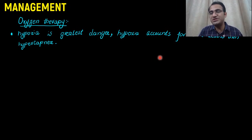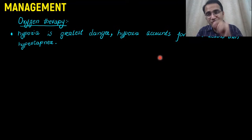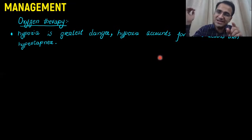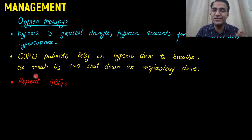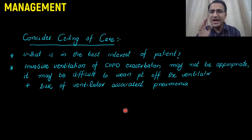COPD patients are usually already at very low oxygen because they are not able to breathe properly. So you have to give oxygen to prevent severe hypoxia, but only give oxygen up to a saturation where there is a mild level of hypoxia that continues to drive the central nervous system. COPD patients rely on the hypoxic drive to breathe — do not give too much oxygen because too much oxygen can shut down the respiratory drive. Repeat arterial blood gases and monitor the patients.